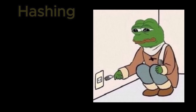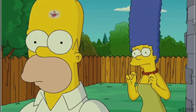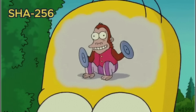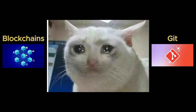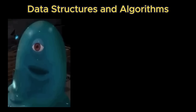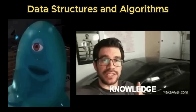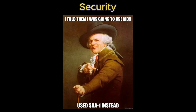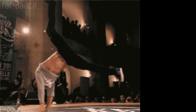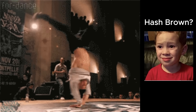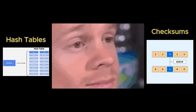99% of developers don't get hashing. Can you even call yourself a developer if you can't explain the difference between SHA-256 and MD5? Are you able to describe the low-level details of hashing and how it powers blockchains and version control systems like Git? If you care about data structures and algorithms and want a more concrete understanding of security fundamentals, this is the video for you. Let's break down exactly what hashing is so you don't think it's just limited to hash tables and checksums.